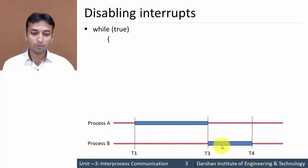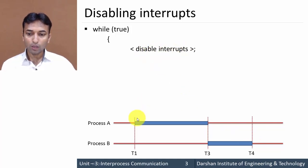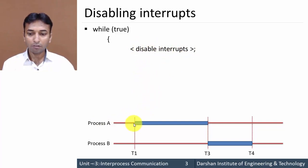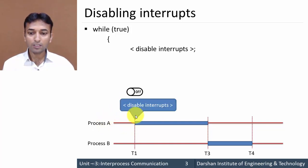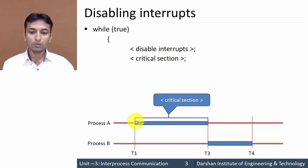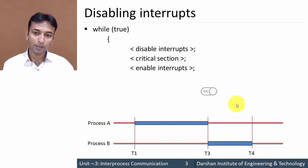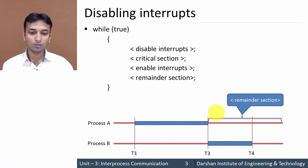The second step is disable interrupt. Whenever a process is trying to enter into the critical region, before entering it will disable the interrupt. So at time t1, before entering the critical region, process A will disable the interrupt. Once the interrupt is disabled, it enters the critical section. When process A has finished its work and exits the critical section, it will again enable the interrupt. The remaining section after time t3 is the non-critical section for process A.